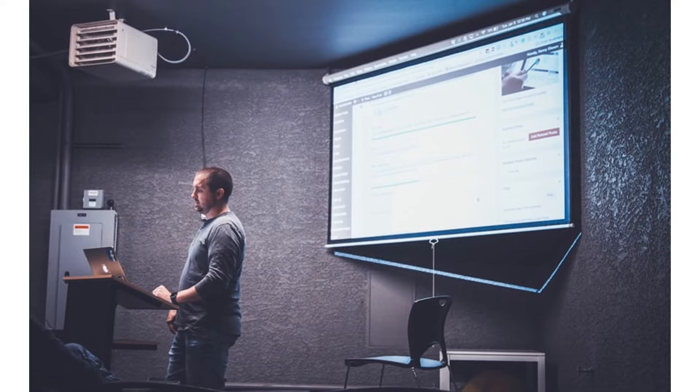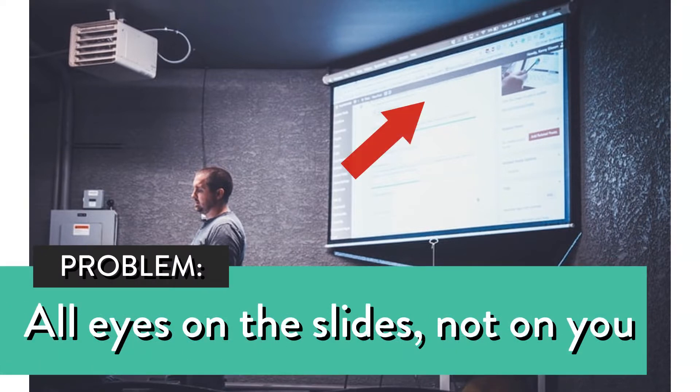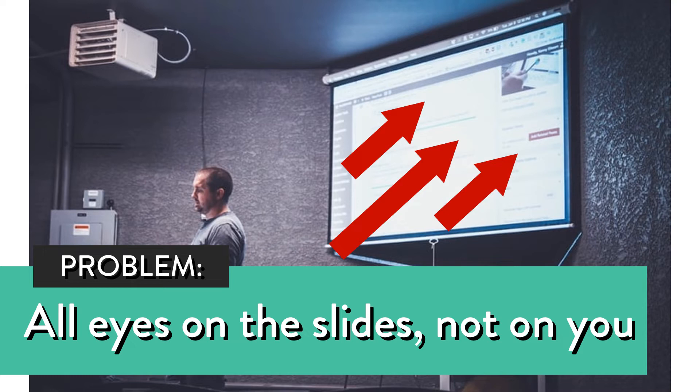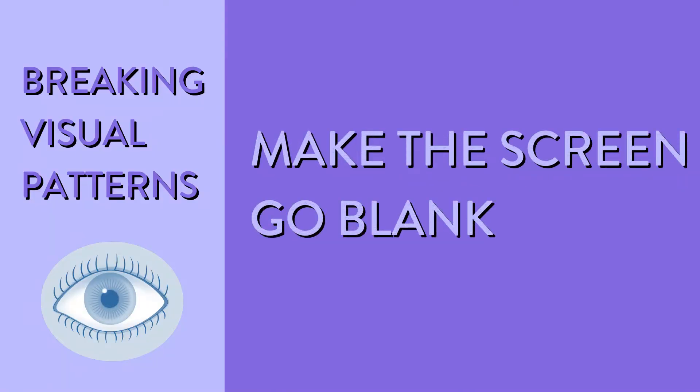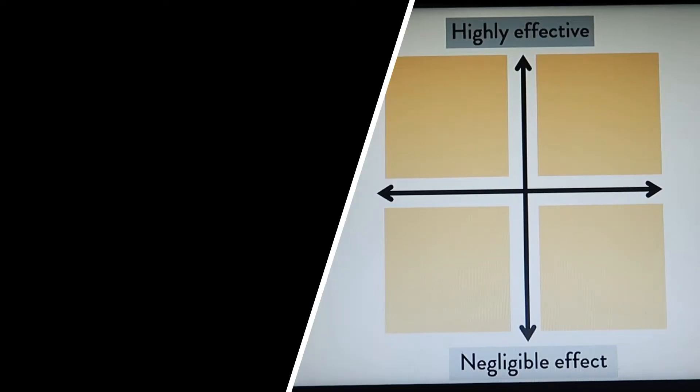If you are using presentation slides when you speak, a common problem is that people stare more at your slides and less at you. There's a little trick you can use to win back eye contact: press the letter B on your keyboard — this makes your screen go black. Almost instantly, all eyes in the audience will shift from the screen back to you and you've made a reconnection. You can also press the letter W, which makes your screen go white, with the same effect — the focus will be back on you.